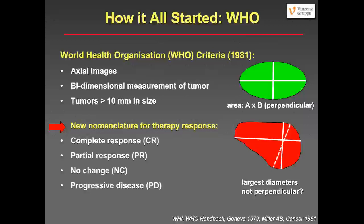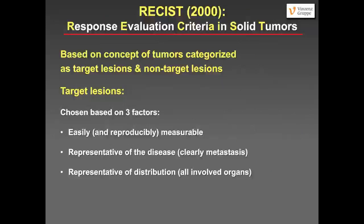To overcome these downsides, a working group convened and established new criteria called RECIST in 2000 — Response Evaluation Criteria in Solid Tumors. That working group presented a concept that categorizes tumors as target lesions and non-target lesions.